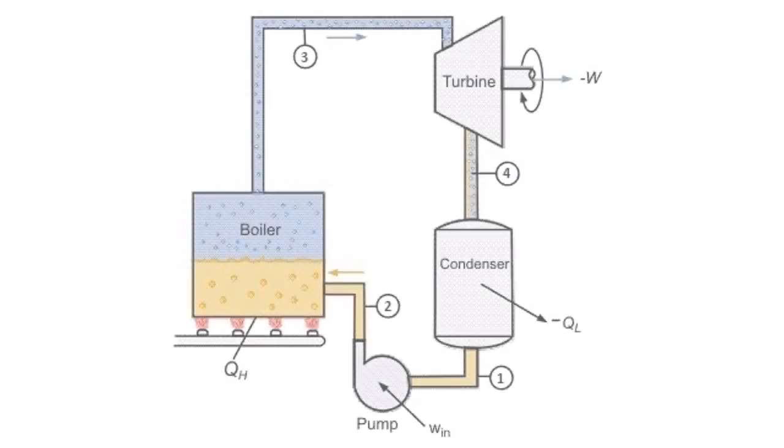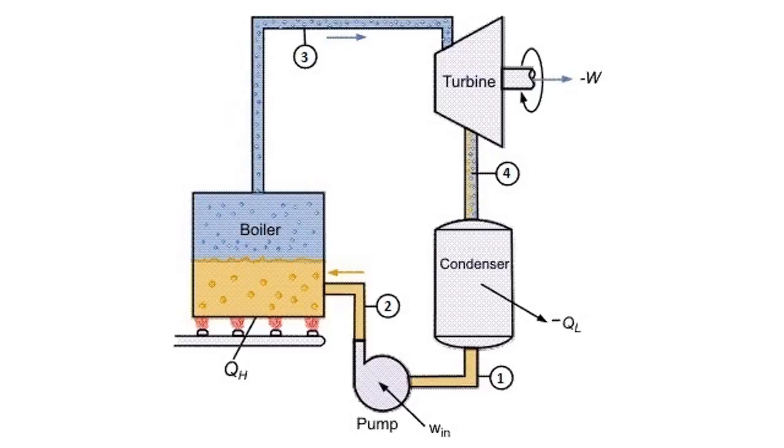The Rankine Cycle consists of four stages, as shown by this diagram. In Stage 1, we have saturated water going through a pump. This pump then leads the water to a boiler, where we have heat addition. This heat addition converts the water into steam.